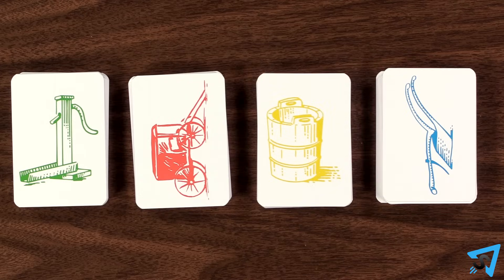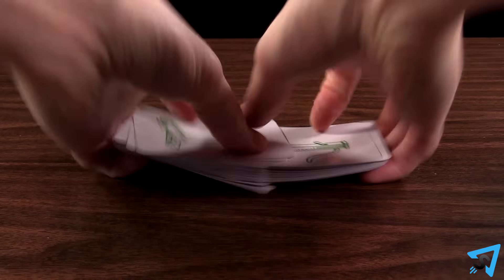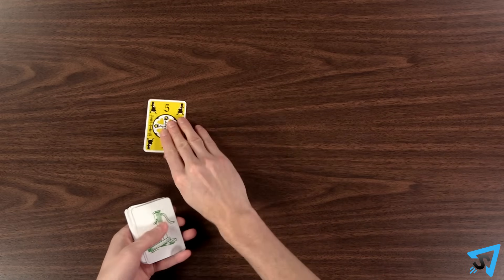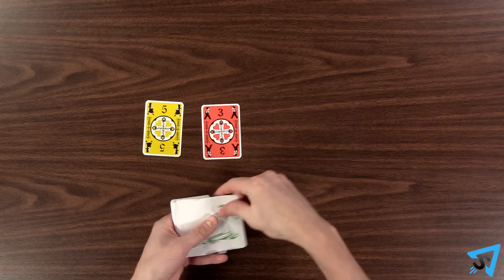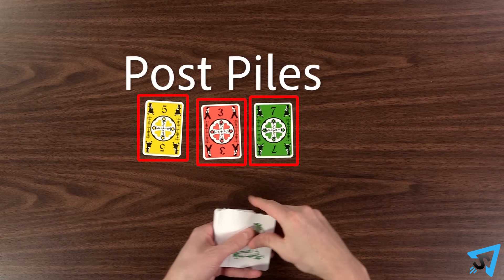Sort the cards into their matching decks, and each player takes a deck and shuffles it, then places the top three cards next to each other face-up in front of them. These are called your post piles.